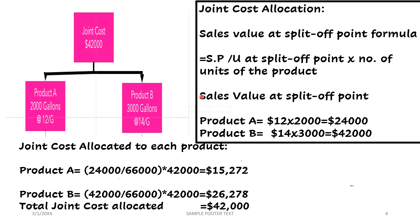The sales value of product A equals 12 times 2,000 units, which is 24,000. For product B it is 14 times 3,000 units, which equals 42,000. Note: please don't confuse this 42,000 sales value figure with the joint cost of 42,000.